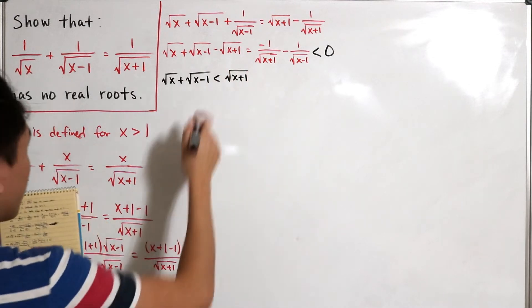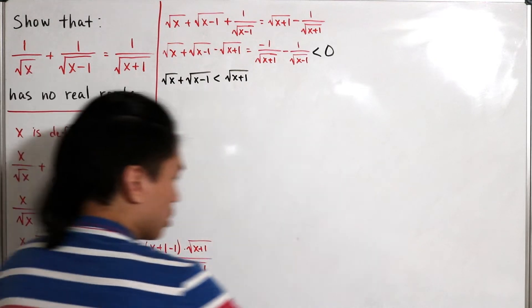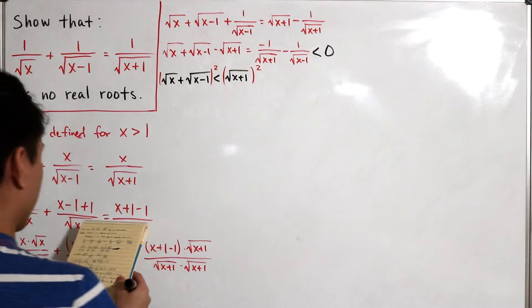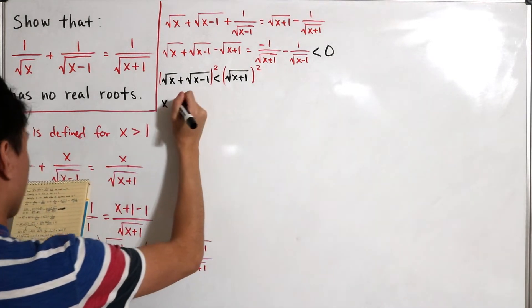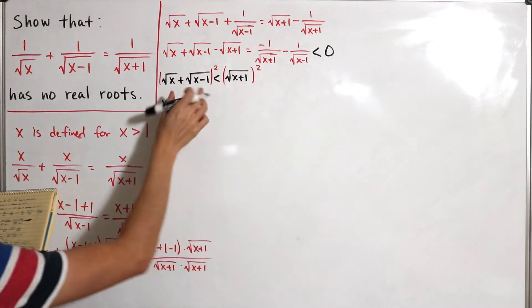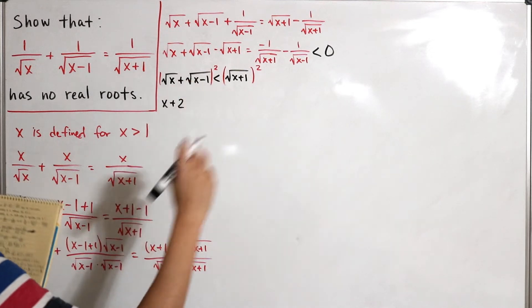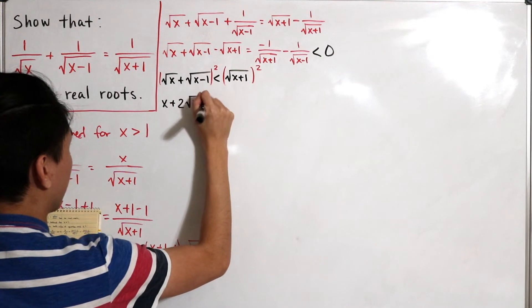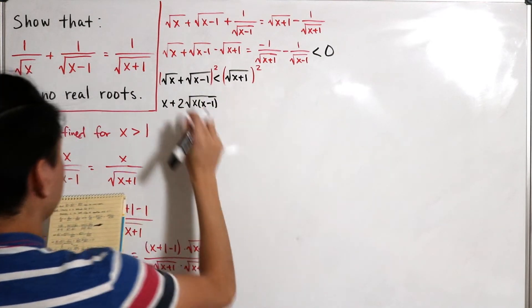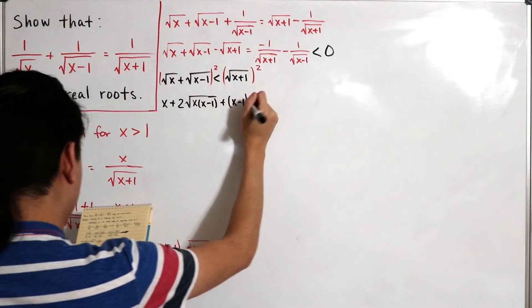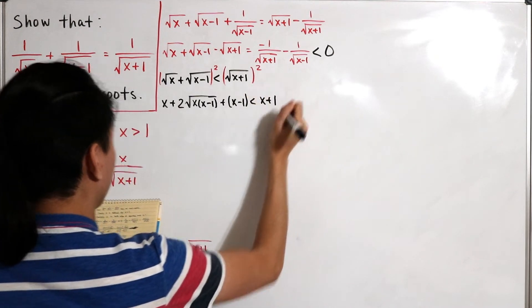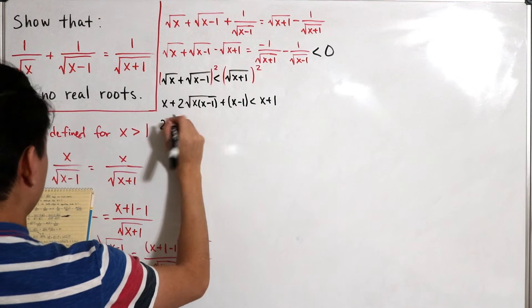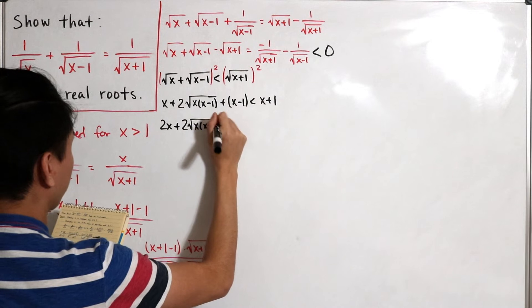Now we square both sides. On the left, applying the FOIL method and using the property that the square root of a product equals the product of square roots, we get: x plus 2 times the square root of x times (x minus 1), plus x minus 1, strictly less than x plus 1.